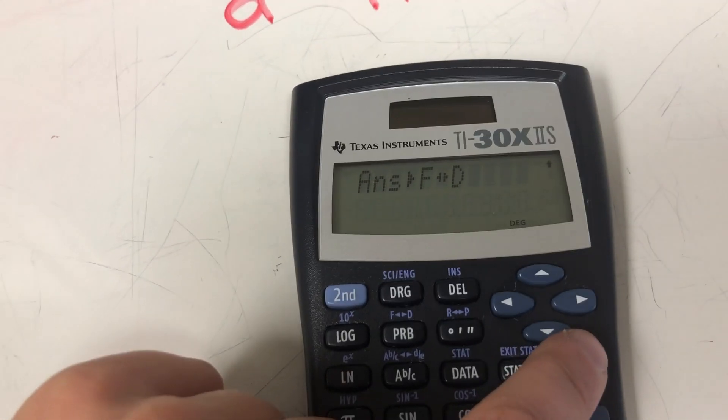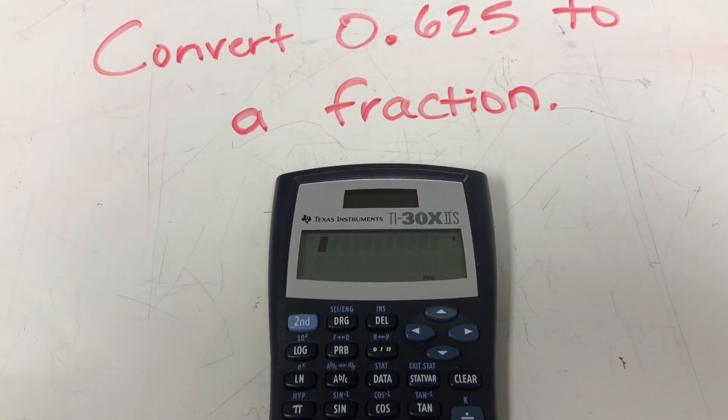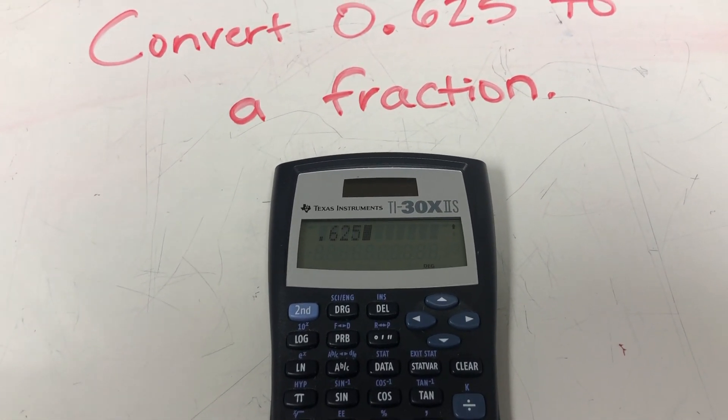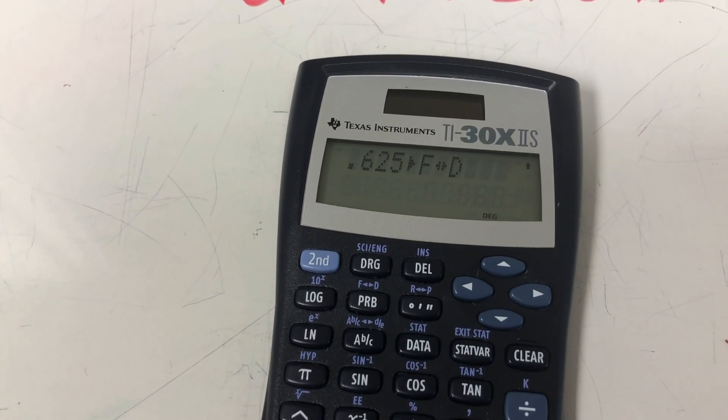But first, I need to get the correct decimal typed in. So I'm going to type in 0.625. Then I'm going to use second, and then the PRB to access my fraction to decimal.